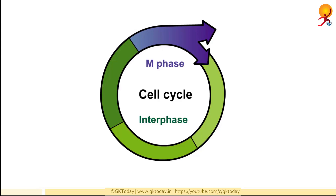The cycle begins when cells recently created by the division of parent cells grow, duplicate organelles, and prepare the machinery needed to replicate DNA. This is called the G1 phase, and it signifies the first gap between the birth of the new cell and DNA replication.